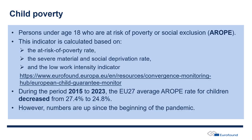When we define child poverty, we're looking at persons under age 18 that are at risk of poverty or social exclusion — AROPE — and this is a very multifaceted indicator. We're looking first at a risk of poverty rate, or monetary poverty; then at material and social deprivation; and then at a low work intensity indicator in the household. You can find more information about these different aspects in our website, which includes a monitor covering not only child poverty measurement but also indicators on education, childcare, nutrition, housing, and other aspects of the Child Guarantee.